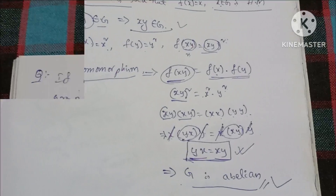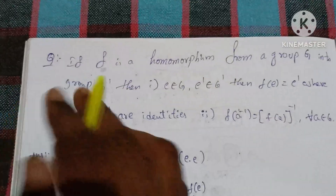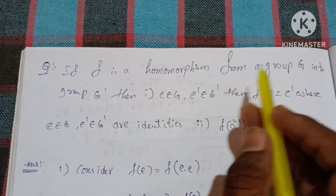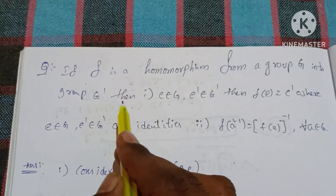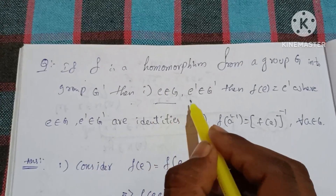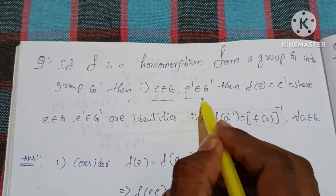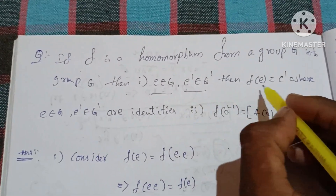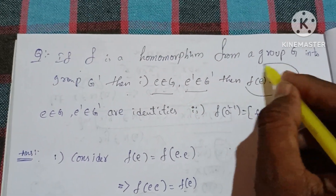Second question: if f is a homomorphism from a group G into G', then prove that f(e) = e', where e is the identity of G and e' is the identity of G', and also prove that f(a⁻¹) = [f(a)]⁻¹.